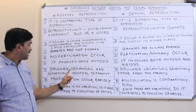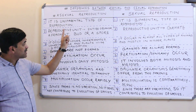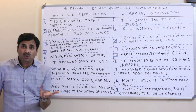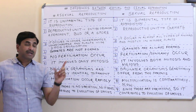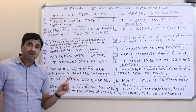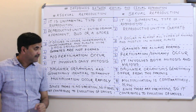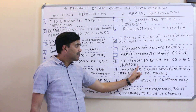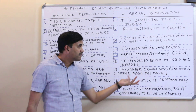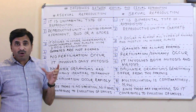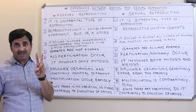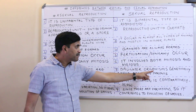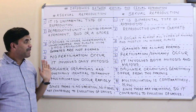Since only mitosis occurs in asexual reproduction, the daughter organisms produced are genetically identical to the parent — they are clones of the parents. In sexual reproduction, however, the daughter organisms genetically differ from the parents, because the offspring is the product of two parents and will therefore be genetically different.